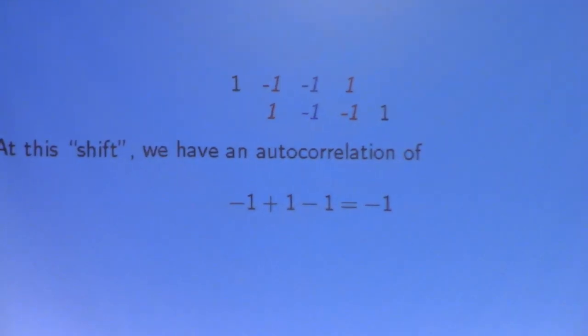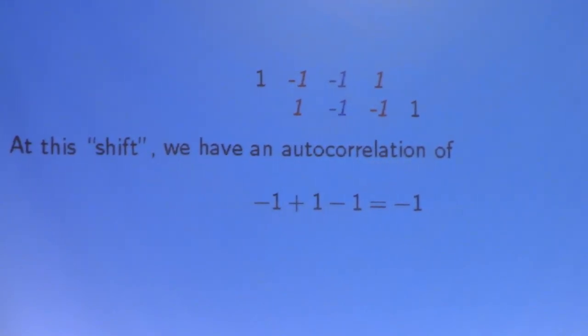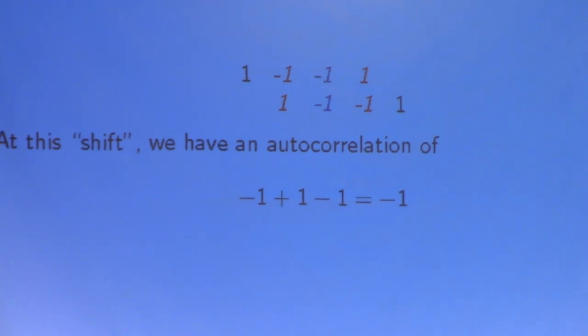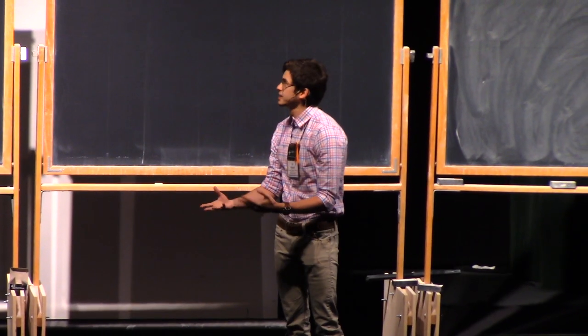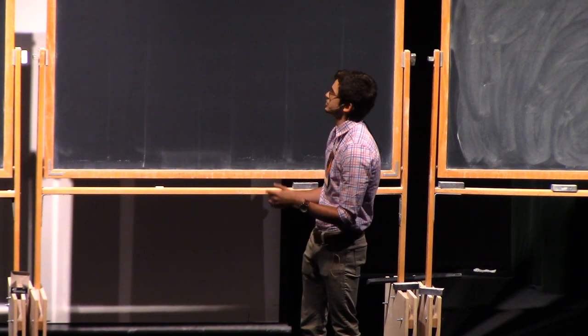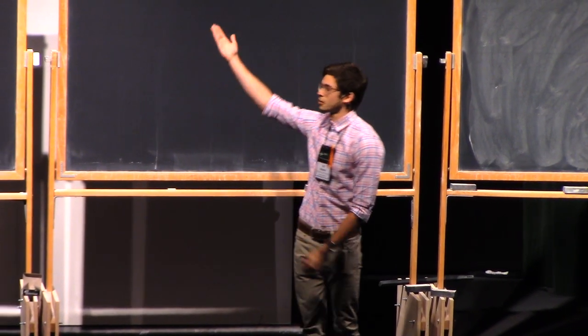Here's an example where we have a sequence against its shift itself, and we see that there's a disagree, an agree, and a disagree. So, when we take the dot product of all the overlaying entries, we see that at this shift, we have an autocorrelation of minus one.